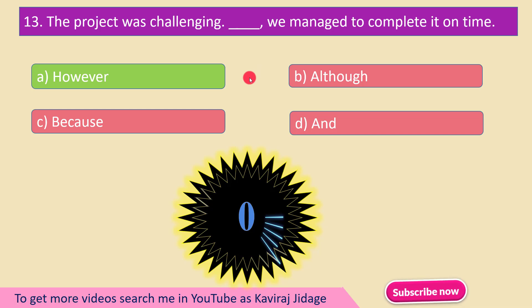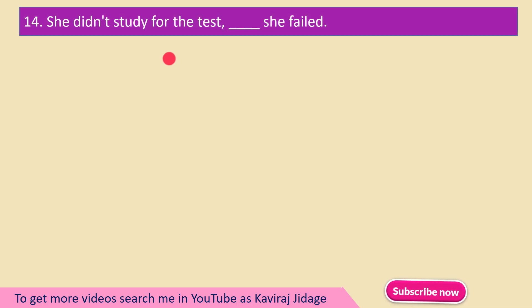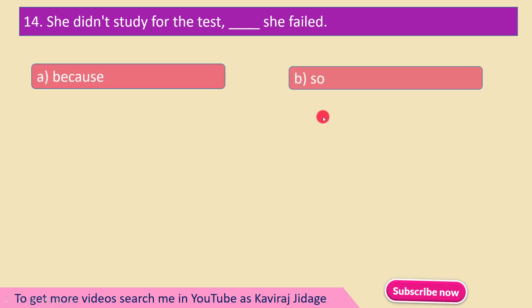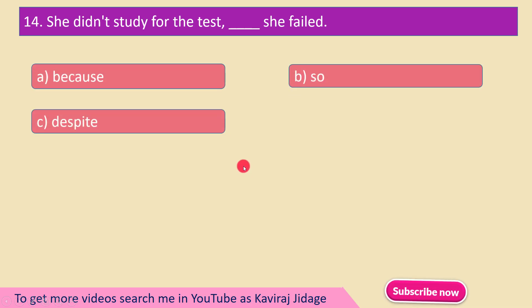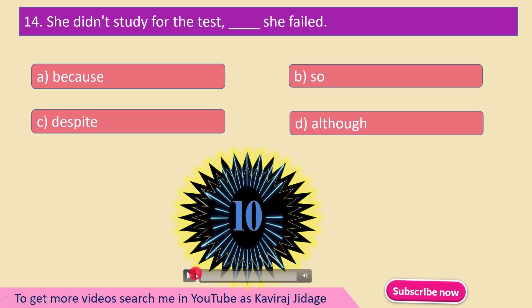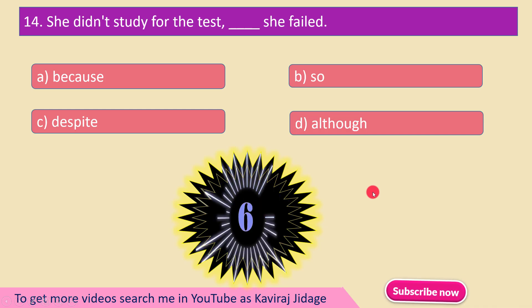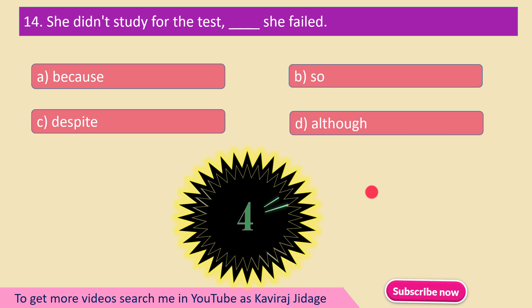She didn't study for the test. ___ She failed. A) Because, B) So, C) Despite, D) Although. The correct answer is option B — So: she didn't study for the test, so she failed.